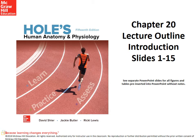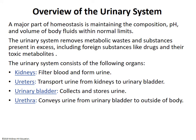Now we're on to chapter 20, the urinary system. A quick overview: the urinary system is a way to clean and filter our body fluids, mainly through the blood. It's a major part of homeostasis, maintaining the composition, pH, and volume of body fluids within normal limits. The urinary system removes metabolic wastes — the breakdown products of chemical reactions — and substances present in excess, including foreign substances like drugs and their toxic metabolites.